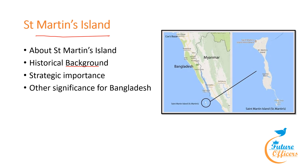Historically, the island was originally part of the Teknaf Peninsula but gradually submerged into the sea around 5,000 years ago and resurfaced approximately 450 years ago. Arab merchants were among the first settlers in the 18th century, naming it 'Jazira' and later 'Narikal Jinjira' (Coconut Island). In 1900, British India annexed the island and it became known as St. Martin's Island, named after the Deputy Commissioner of Chittagong. Strategically, the island is near the Strait of Malacca, close to one of the world's busiest maritime routes, offering potential for monitoring maritime activities and strategic interests of global powers.